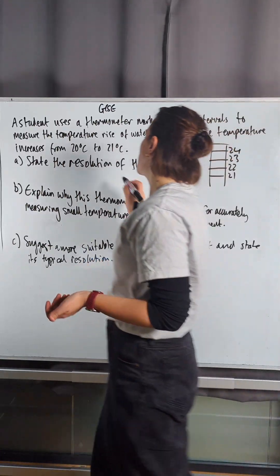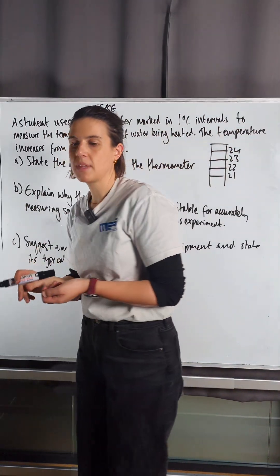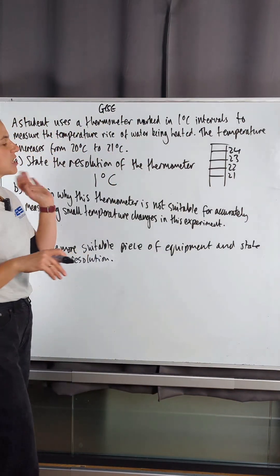So the resolution is going to be one degree C. Now part two asks to explain why this thermometer is not suitable for accurately measuring small temperature changes in this experiment.